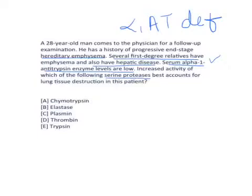Before we get into the options, we need to know the function of alpha-1 antitrypsin. Alpha-1 antitrypsin is synthesized from hepatocytes (liver cells). Its function is to regulate serine proteases — particularly elastase and trypsin. Alpha-1 antitrypsin regulates the level and quantity of their enzyme activity.